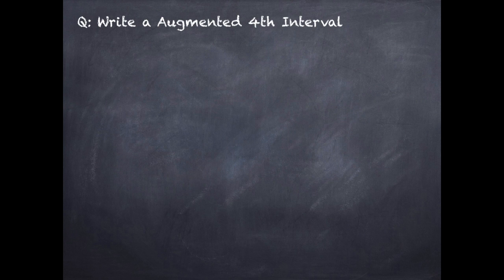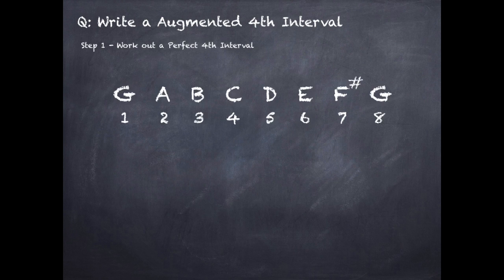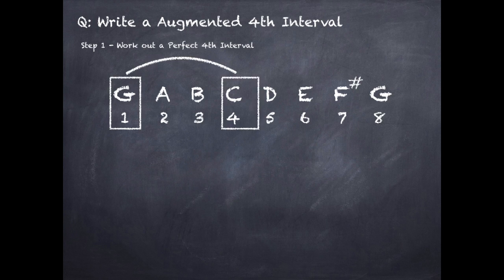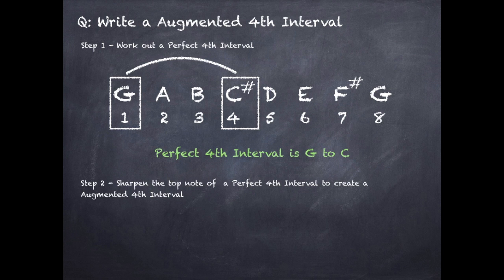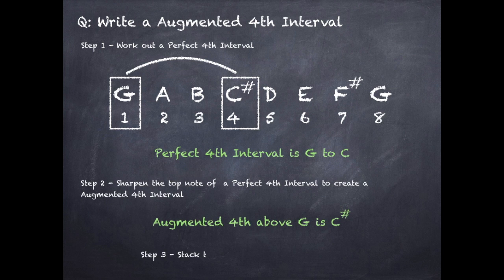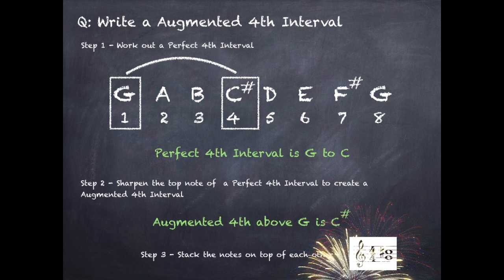To write an augmented fourth interval, step one: work out a perfect fourth interval. Using G, we go from the first note of the G major scale to the fourth note. So a perfect fourth interval is G to C. Step two: sharpen the top note of the perfect fourth to create an augmented fourth, so C becomes C sharp. Our augmented fourth interval is G to C sharp. Step three: stack the notes on top of each other on the stave.